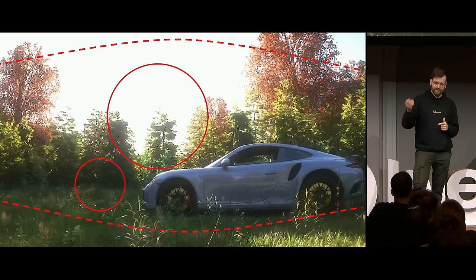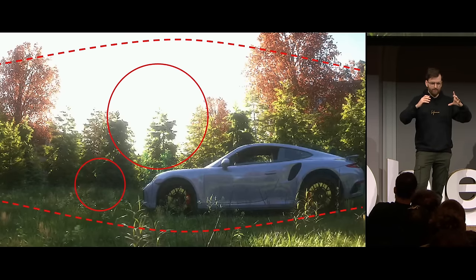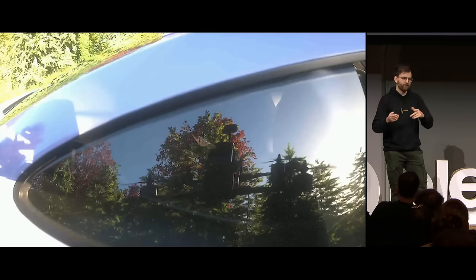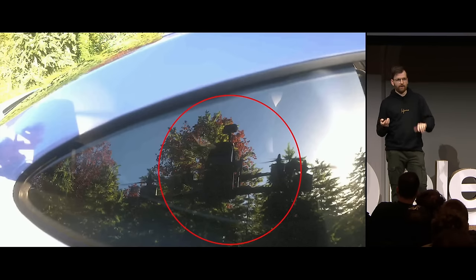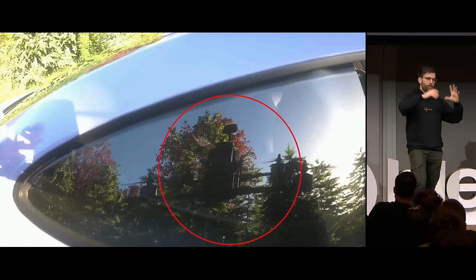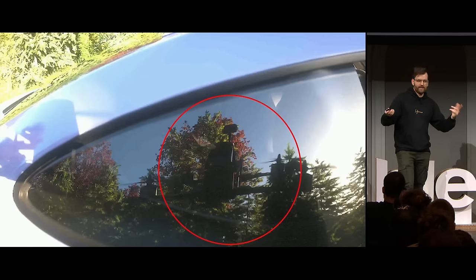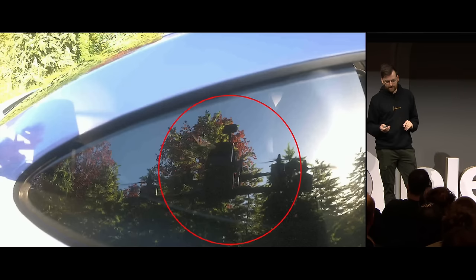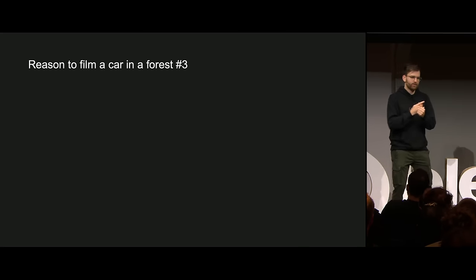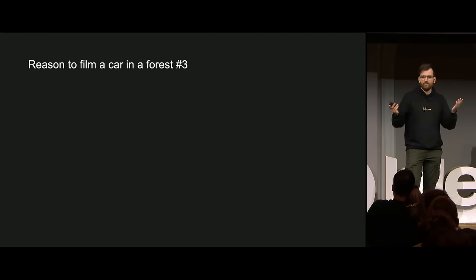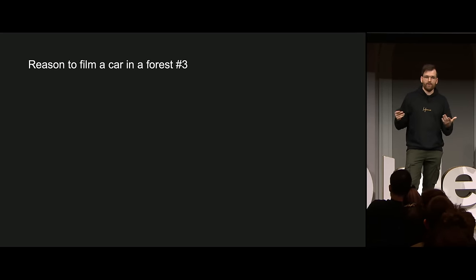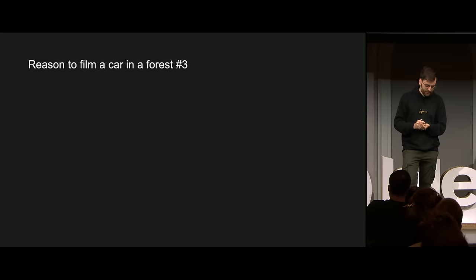And since we had the actual 3D model of the drone in the scene, you can see it in the reflection of the car, which opens the door for some mind games. Why would you include the reflection of the drone in the car? We might even explore this thought further. So one more reason to film a car in the forest: what if someone got a new car and wants to show it off to everyone?